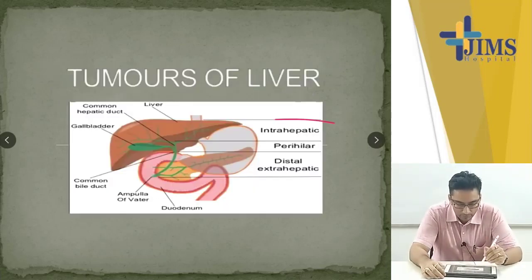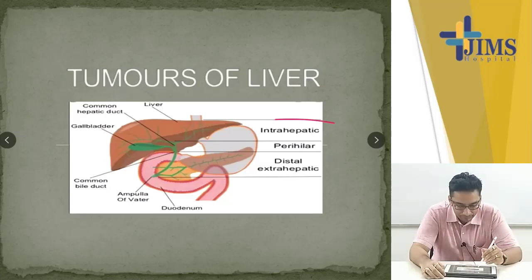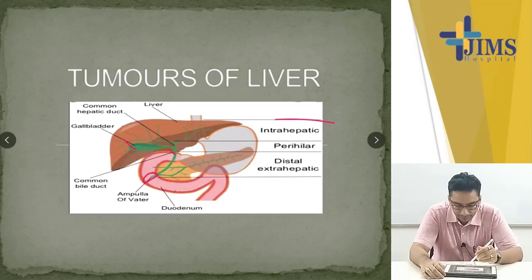Firstly, you have to know the basics of anatomy which we all know. This is the gallbladder with the common hepatic duct, common bile duct which will open into the ampulla of Vater. There are divisions like intrahepatic, perihilar and distal extrahepatic parts.